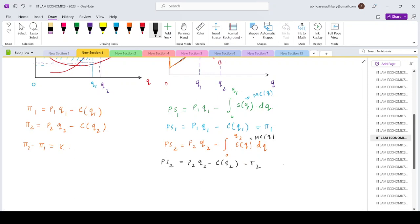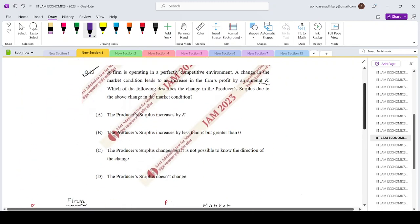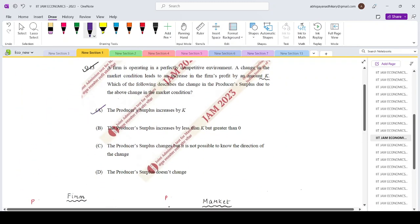The profit expressions and the producer surplus expressions are exactly the same. So what would be the difference between the producer surplus, PS2 minus PS1? That would be same as π2 minus π1, which is exactly equal to k. So that gives us option A, that is the producer surplus will also be increasing by the same amount k. Thank you.